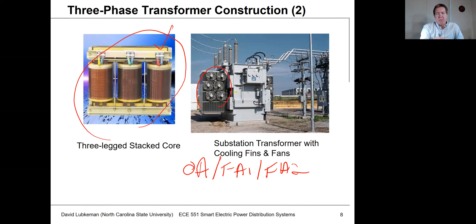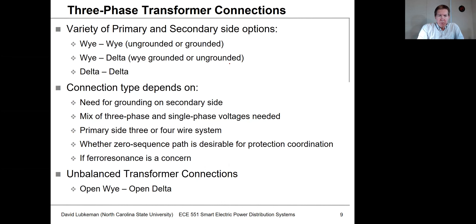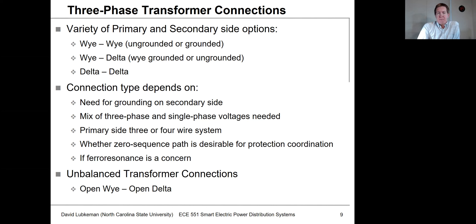This unitized three-phase transformer is very common in substations and for large industrial loads. As far as three-phase transformer connections are concerned, we have a variety of primary and secondary options. Remember, primary is the medium voltage side and secondary is the low voltage side connected to the customer. We could have Y-Y (grounded or ungrounded on either side), Y-delta, delta-Y, or delta-delta connections, with various reasons for choosing one over another.